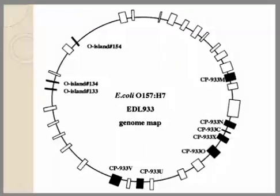This is just to show you how a map looks like. This is a genome map of a single organism, E. coli, highlighting the loci for different genes. Islands are the regions which are unique and specific for a particular organism.